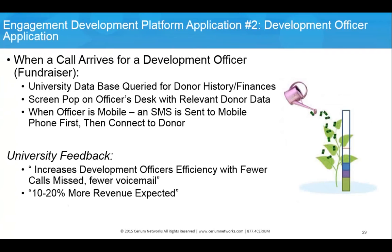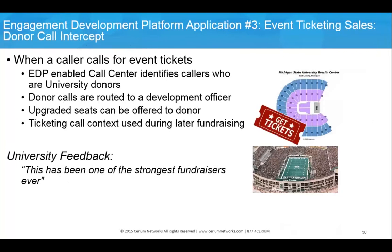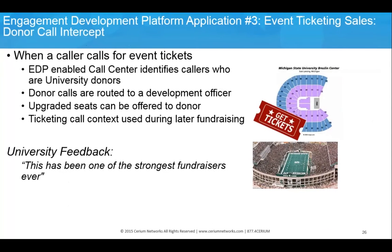Success begets success: MSU then leveraged EDP to provide more intelligence regarding donors that call in to the fundraising officer. If the officer is at their desk, they get a screen pop with the information; if they are mobile, they receive an SMS with the information and then connect to the donor. Taking intelligence a step further, when event callers are identified as donors, they are rerouted to a fundraising officer for upsell, resulting in higher revenue.